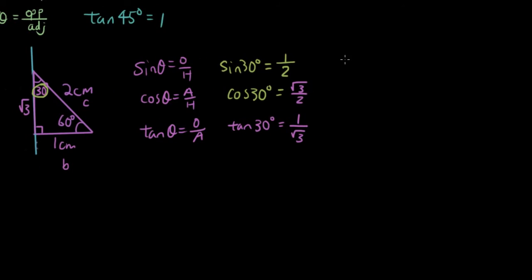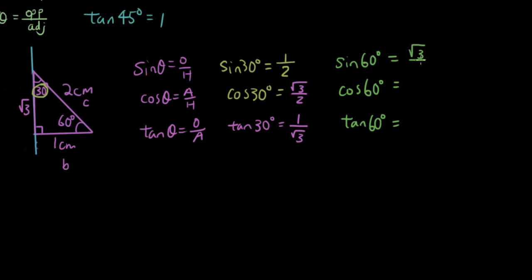Now let's work out the last three ratios for 60 degrees. Sin 60 — if theta is the 60-degree angle, that's opposite over hypotenuse. Cos 60 — if theta is there, that's adjacent over hypotenuse. And tan 60 — that's opposite over adjacent. So these are the exact value triangles.